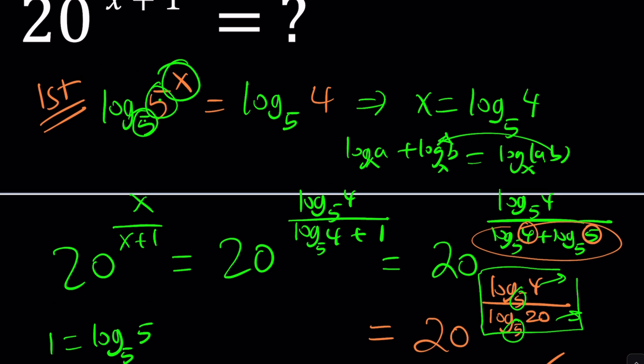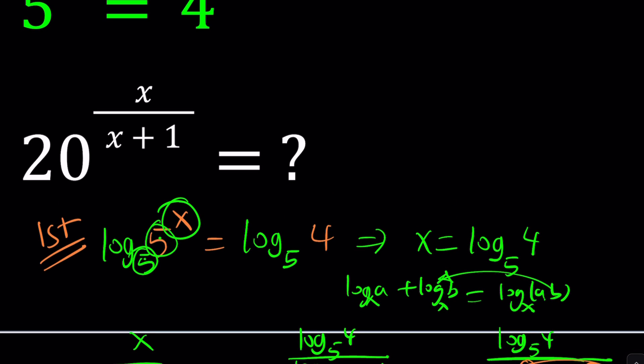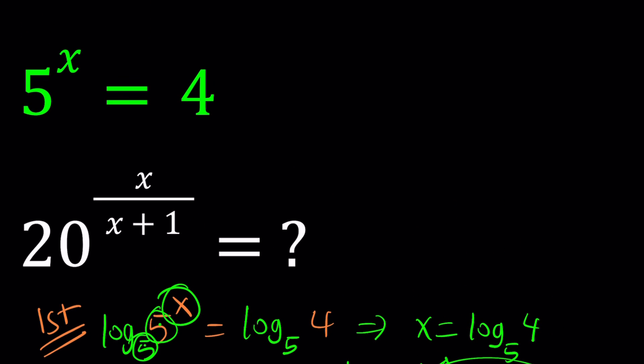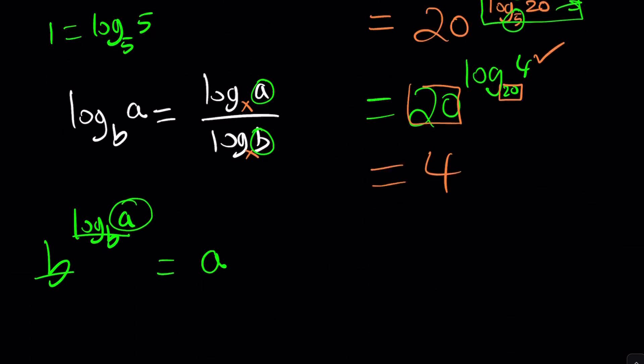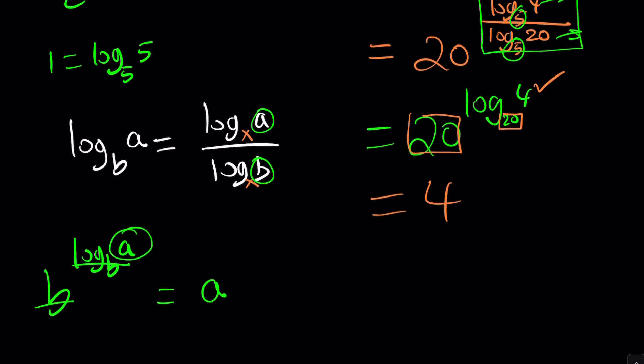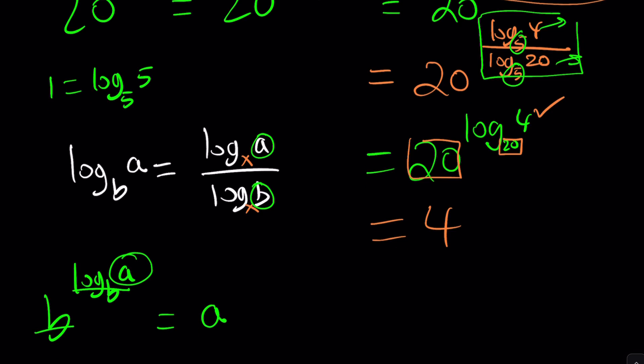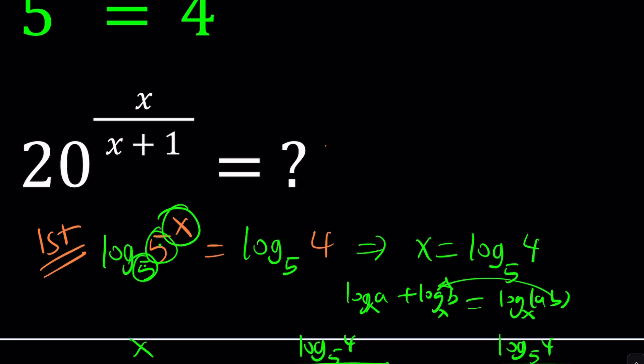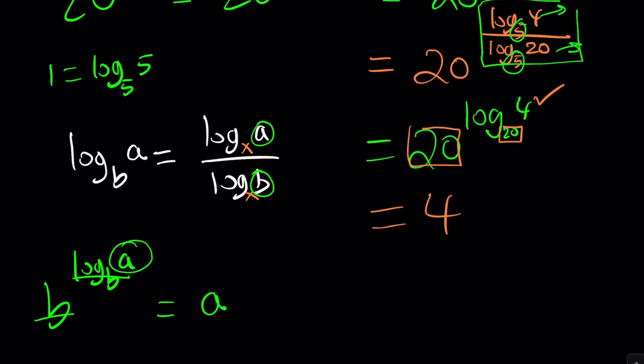Remember, we were looking for 20 to the power x over x plus 1 when 5 to the power x is equal to 4. And that's what we exactly found. Wait a minute. Is that the same thing as the original problem? Well, kind of. I mean, that doesn't necessarily mean they're always going to be equal. But in this case, that happens to be the same thing. Make sense?